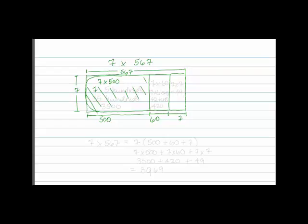which we can think of as 7 times 5 hundreds, which is 35 hundreds, which is 3500.